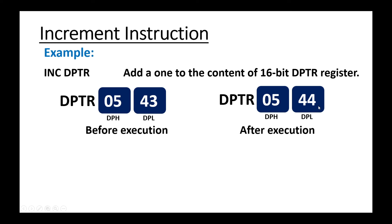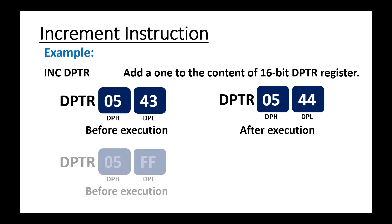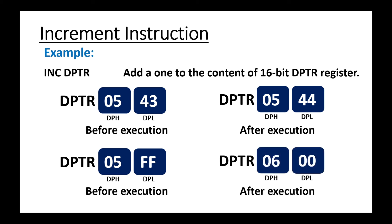Let's take another example. Before execution, if DPTR is having 05FF, then after execution of INC DPTR the content would become 0600 — one would be added, so carry is propagated into the higher byte, making it 06.